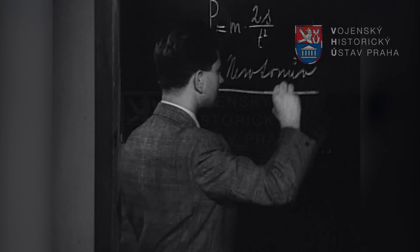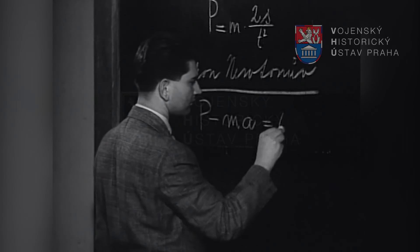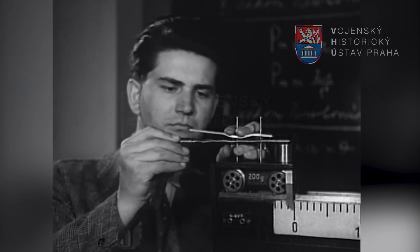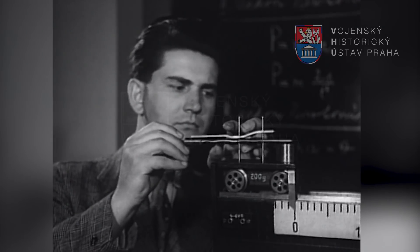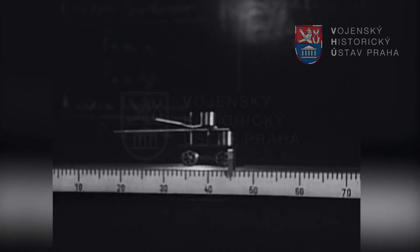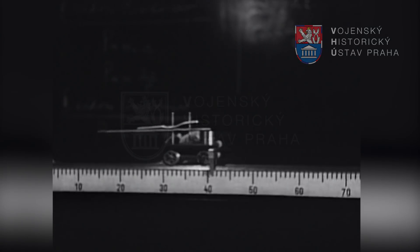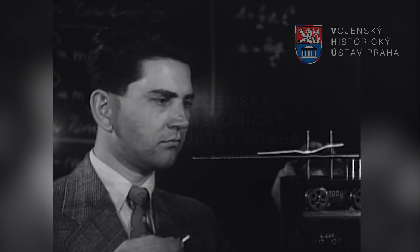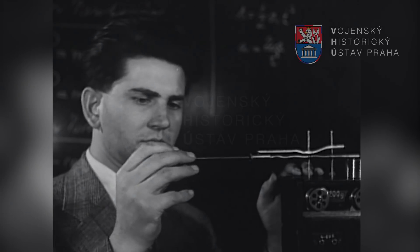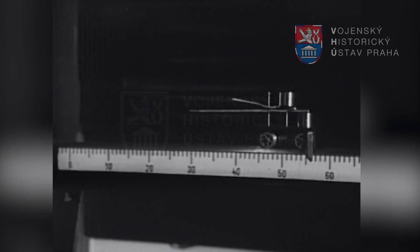Třetí pohybový zákon Newtonův je princip akce a reakce. Anulujeme-li rovnici změny hybnosti, vidíme, že každá akce P je vždy rušena stejně velikou a opačně působící reakcí M·A. Tento zákon demonstrujeme vymrštěním závaží pružinou z vozíku, který je přitom posunut stejnou silou opačným směrem. Zvětšením závaží při stejné síle pružiny zvětší se i reakce na vozík, což se projeví delším dojezdem.